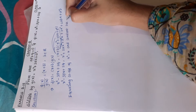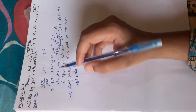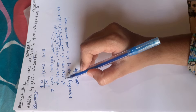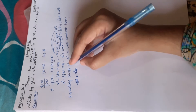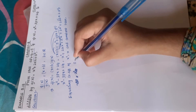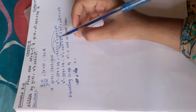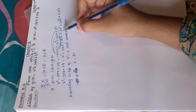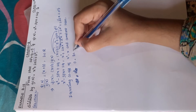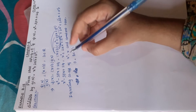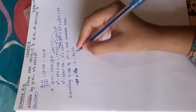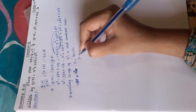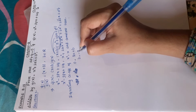Comparing the x square term: on the left-hand side the x square coefficient is zero, and on the right-hand side it is 2a plus b. So 2a plus b equals zero, which gives b equals minus 2a.